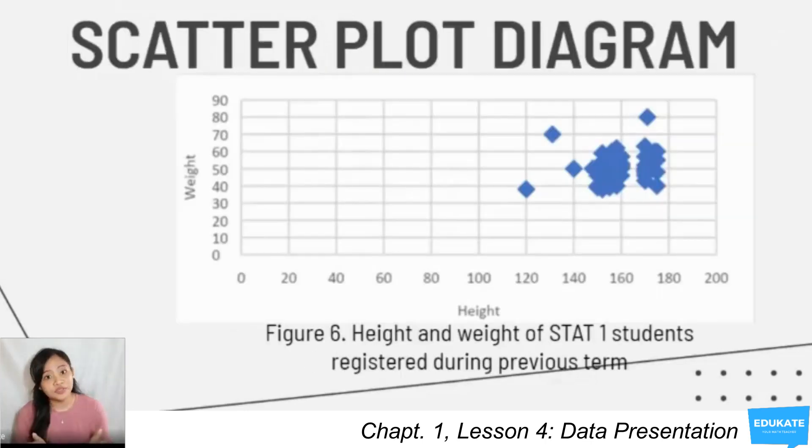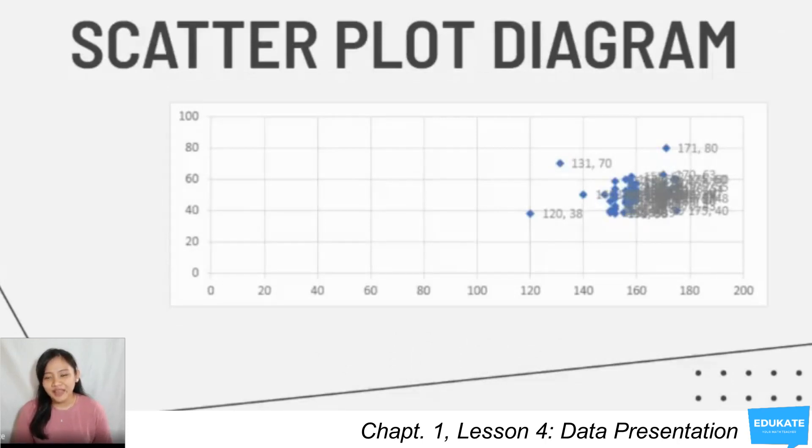You can also use this, which is a scatterplot diagram, where each data or where each point is represented as one point in the diagram. Now, this is a bad example of a scatterplot diagram where you are going to label each point for their x and y axis. And also, you're going to notice that there is no title for the graph.